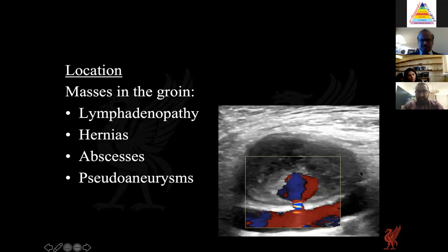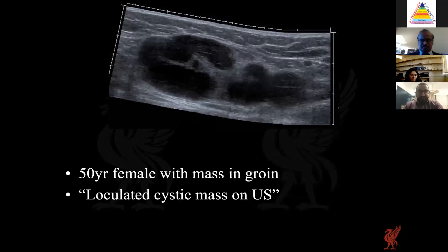In one case of a groin mass, the history revealed a vascular interventional study two weeks earlier, and the patient developed a lump. Ultrasound nicely showed a yin-yang shaped colour flow Doppler activity at the centre of an echogenic lesion, which was diagnosed as a false aneurysm. We could be very specific on the diagnosis from knowing not only the location but other imaging features.